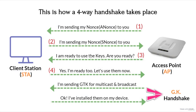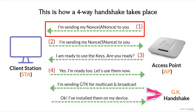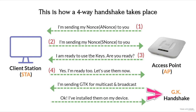Let's assume that the left one is you and the right one is me. I am the access point and you are the station. In the four-way handshake, we are going to send four messages among us. I send the first message because I am the access point — I say I am sending my ANonce, which is my nonce, to you.